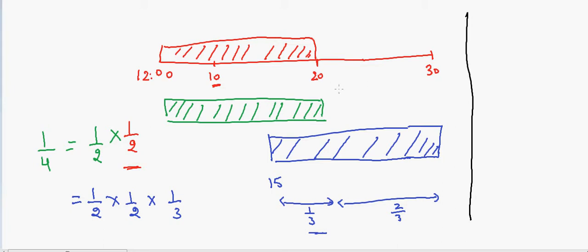Going further to a more advanced level: suppose you want to calculate the chances that you — the red friend — reach first, and your green friend reaches second. In that case you have to catch the first train and he has to catch the second train, so that equals 1/2 times 1/2, which is again 1/4.